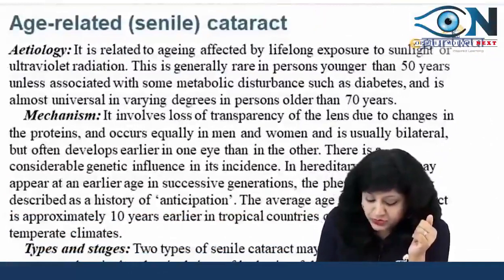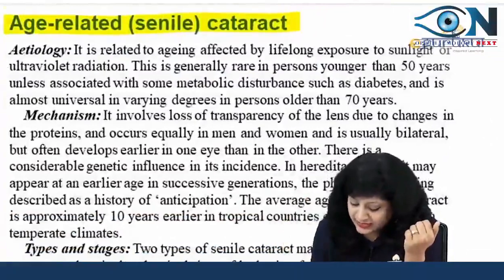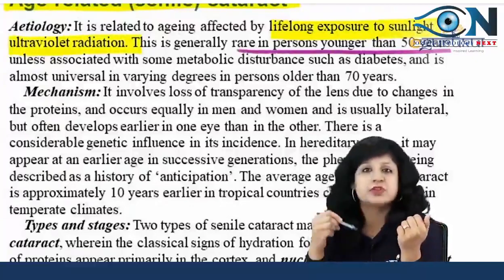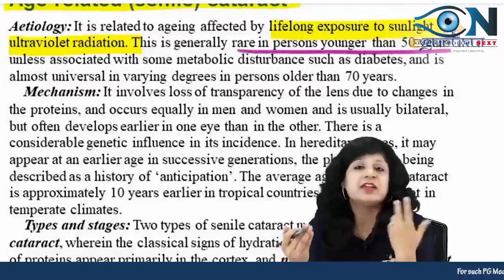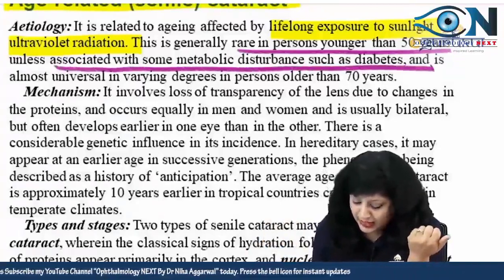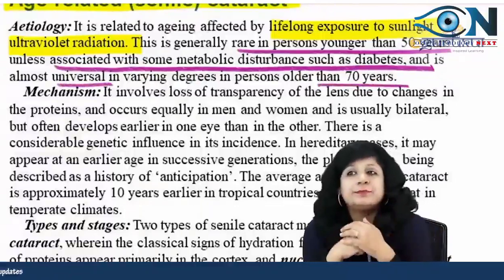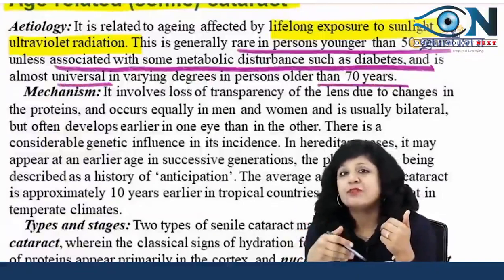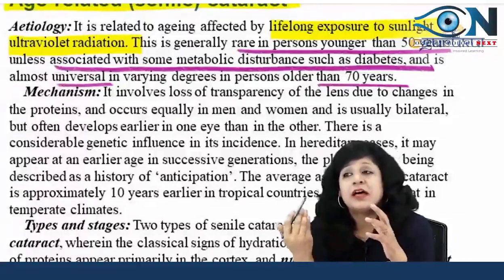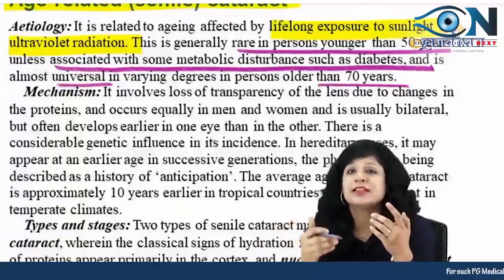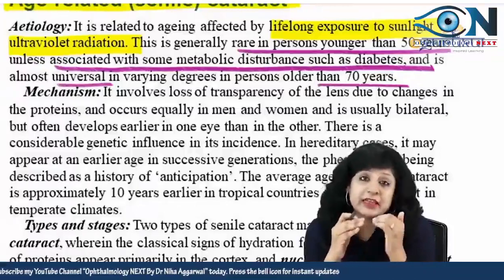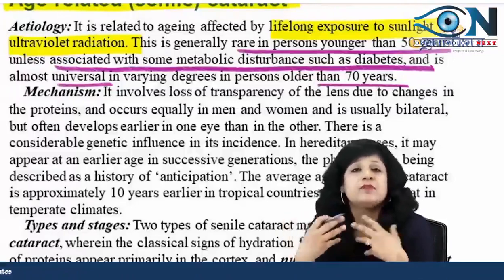Now let us start with the most common cataract — senile or age-related cataract. It is related to aging, affected by lifelong exposure to sunlight and ultraviolet radiation, generally rare in persons younger than 50 years of age, and almost universal in patients more than 70 years of age. In diabetic people, we can have senile cataract at a younger age group, called presenile cataract. Any patient coming at age 70 will always be expected to have some degree of cataract.